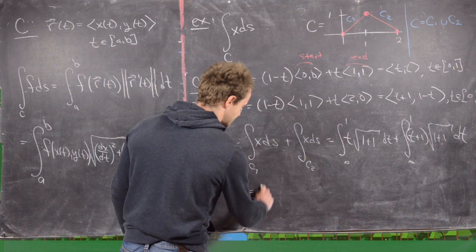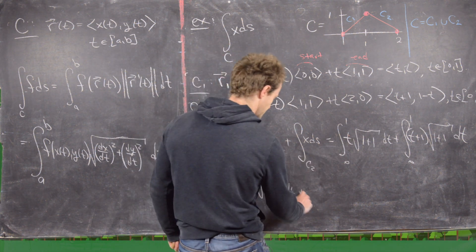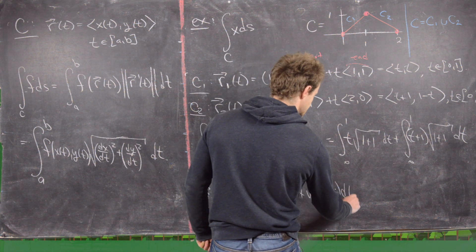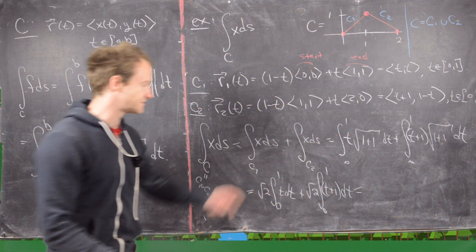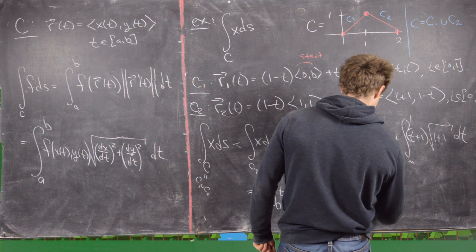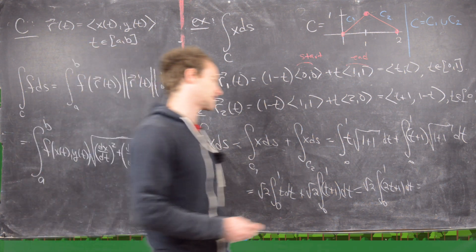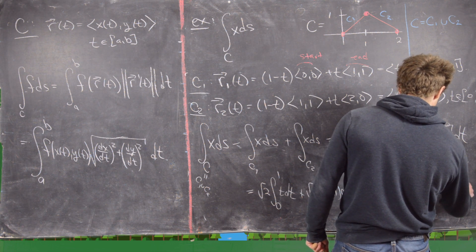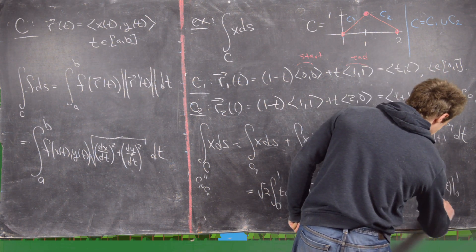That gives us √2 times the integral from 0 to 1 of t dt, plus √2 times the integral from 0 to 1 of (t+1) dt. We can combine these as √2 times the integral from 0 to 1 of (2t+1) dt. Taking the antiderivative gives √2 times [t² + t] evaluated from 0 to 1, which equals 2√2.